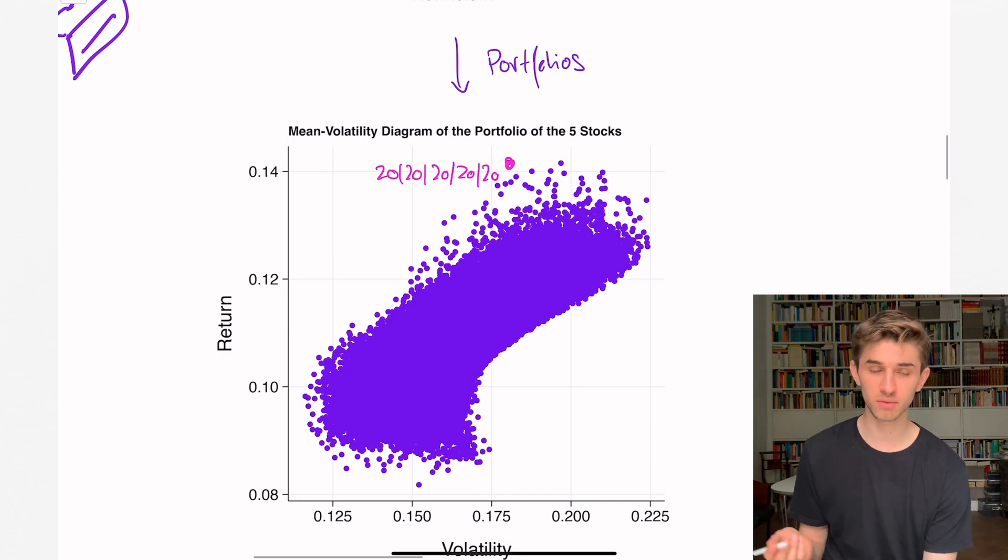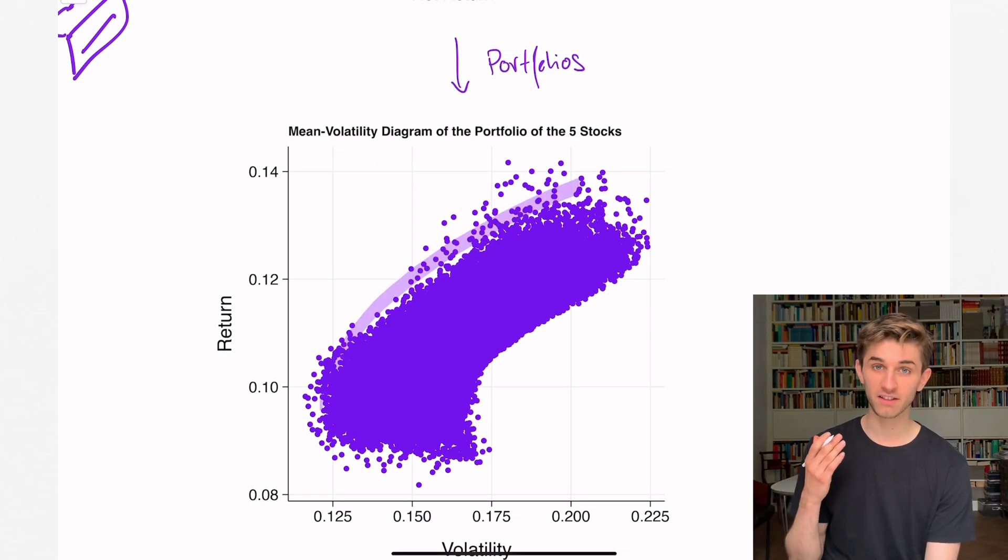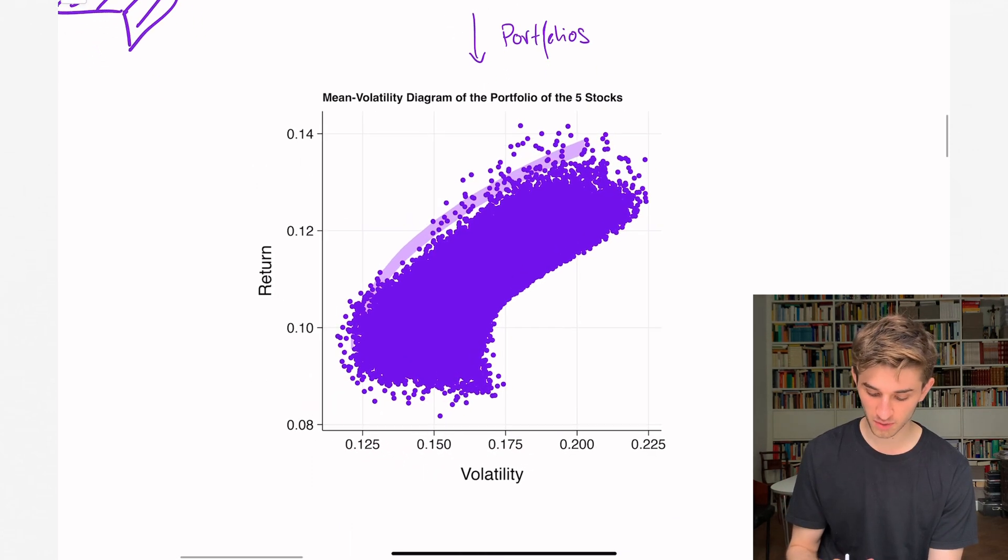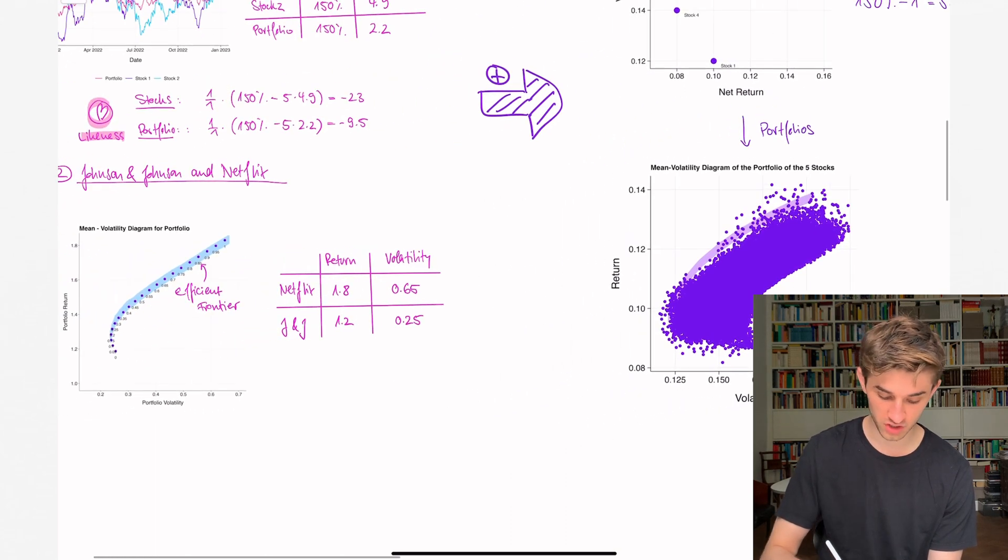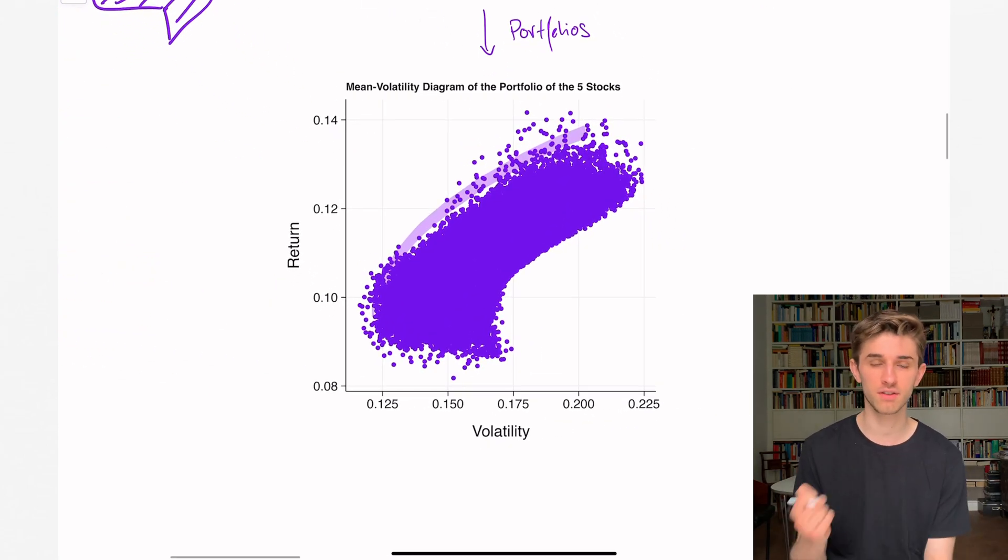You see that it has a similar shape to what we did with two risky assets. If you look at the upper bound, the efficient frontier, it also has this curvy shape. The lesson I want you to take away is that with five stocks, really nothing changes. With five stocks, everything works just as with two stocks. We have portfolios which are obviously stupid and portfolios on the efficient frontier which you can invest in, and you choose depending on your level of risk aversion.